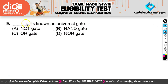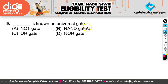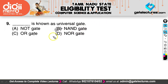The next question asks which gate is known as a universal gate. A universal gate is a gate which can implement any Boolean function without needing to use any other gate. Just by using that single gate, we can implement any other gate — AND, XOR, XNOR, and everything. NAND and NOR are both universal gates.